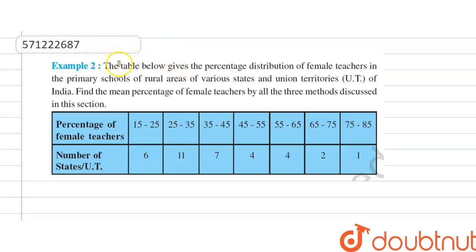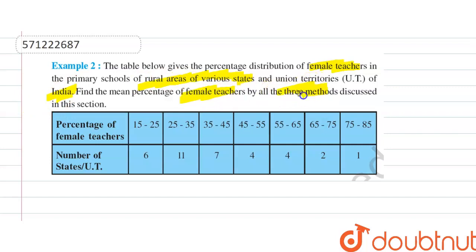Hello guys, the question is: the table below gives the percentage distribution of female teachers in the primary schools of rural areas of various states and union territories of India. Find the mean percentage of female teachers by all 3 methods — that is, the direct method, shortcut method, and step deviation method.